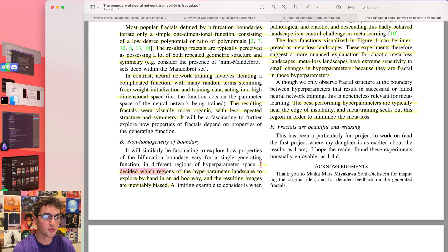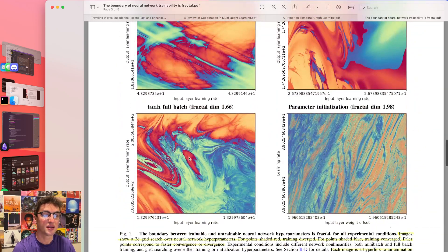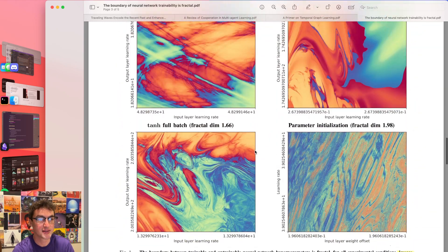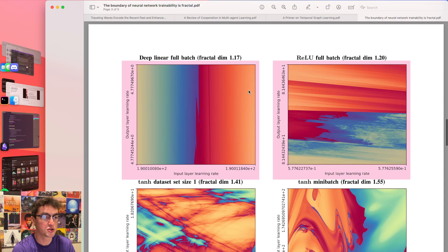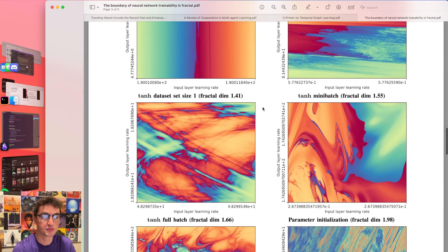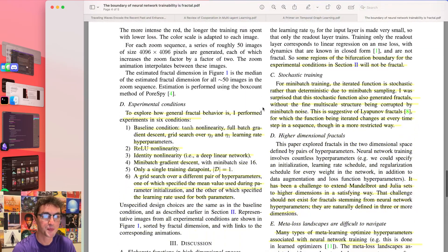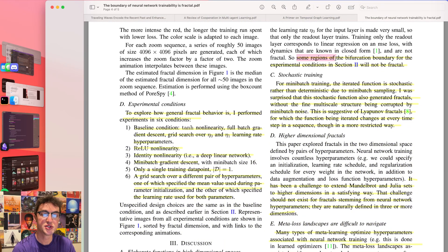He decided which regions of the hyperparameter landscape to explore by hands in an ad hoc way, and the resulting images are inevitably biased. So these up here, the entire landscape doesn't look like this. A lot of the landscape is just plain converge or diverge, but they searched out cooler looking parts of the landscape.